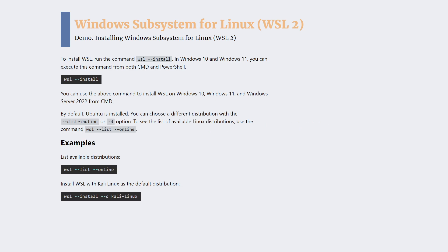Installing WSL 2 is straightforward. Simply open a command prompt or PowerShell console with administrator privileges and run the command: wsl --install. This command works on Windows 10, Windows 11, and Windows Server 2022, making the installation process identical for these desktop and server versions. By default, WSL 2 installs Ubuntu Linux. However, you can install a different distribution using the -d option. To see a list of all available distributions, run the wsl --list --online command.